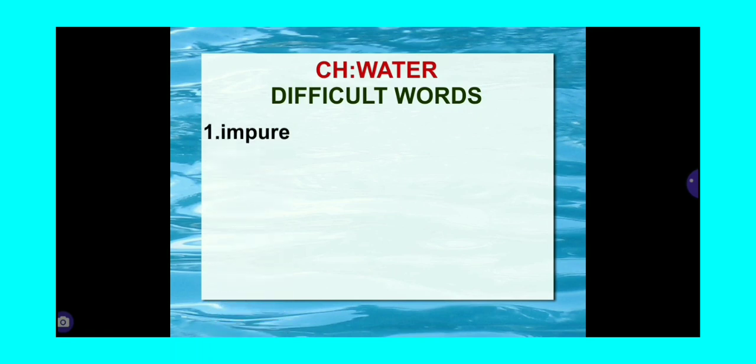First word is impure. I-M-P-U-R-E. Impure means saaf na ho, ashuddha ho. Next, source. S-O-U-R-C-E. Source means कोई चीज़ कहाँ से आई है, उसका main source क्या है, उसका main origin क्या है.